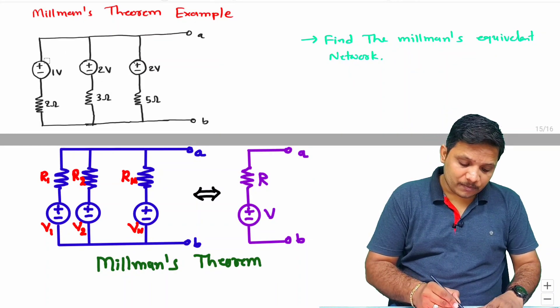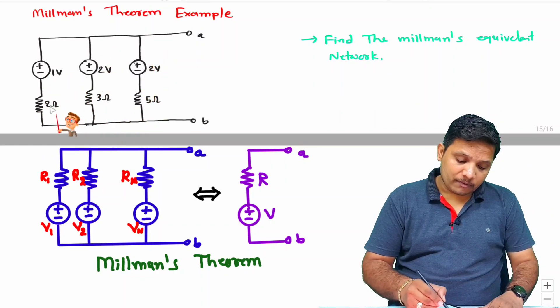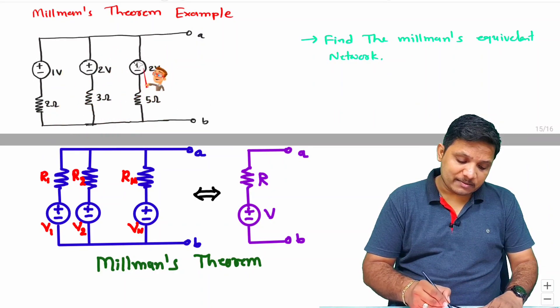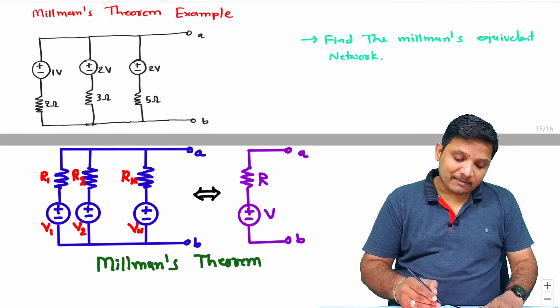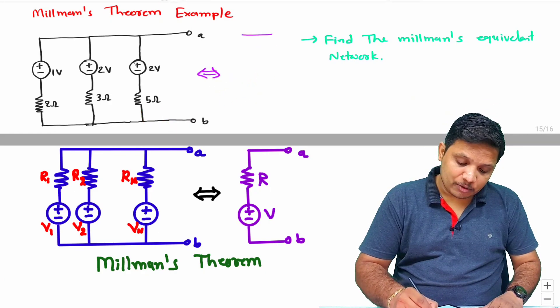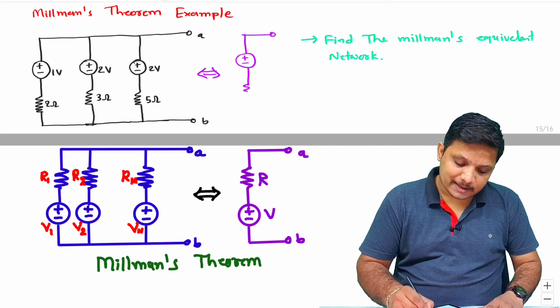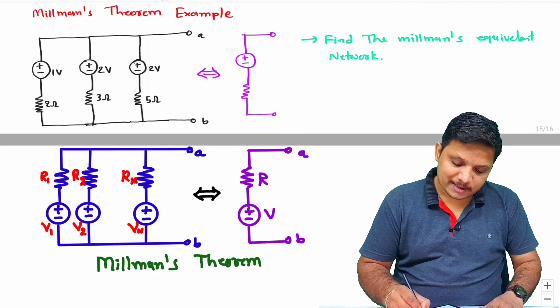Here if you observe, we have parallel combination of voltage source in series with resistance. That will be equivalent to voltage source in series with resistance.